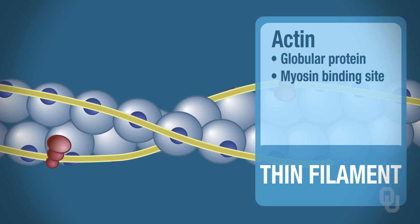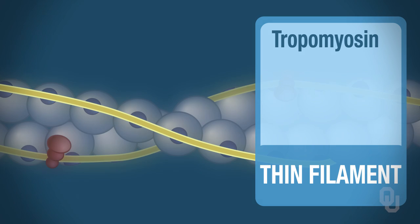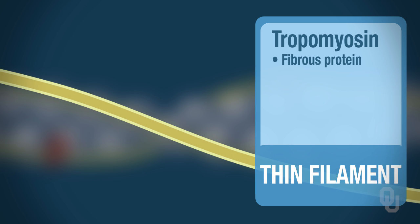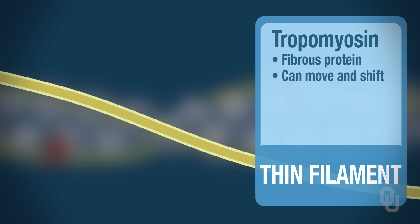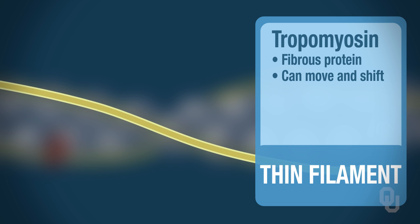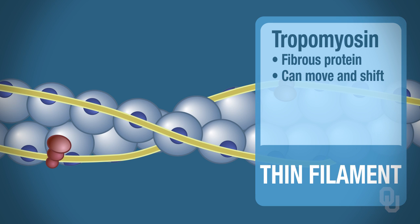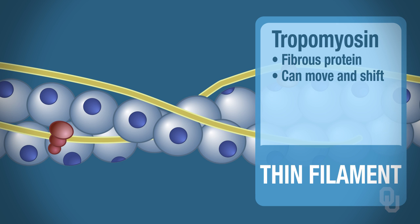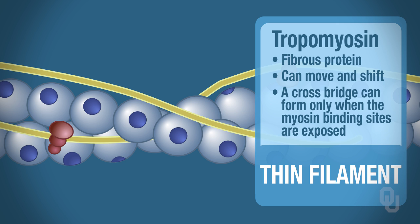The next structure that makes up the thin filament is called tropomyosin. This is a fibrous protein, meaning it's a long protein — not a glob. Tropomyosin is very interesting because it has the ability to move; it can shift over. When it shifts, it can either cover the myosin binding sites or expose them. In order to form a crossbridge, the tropomyosin has to shift over to expose the myosin binding site.